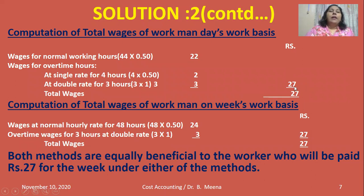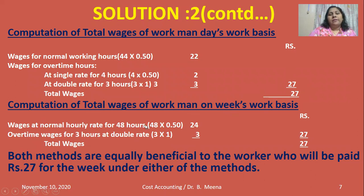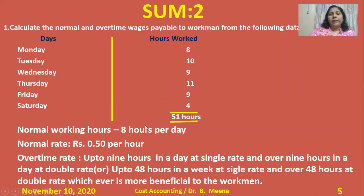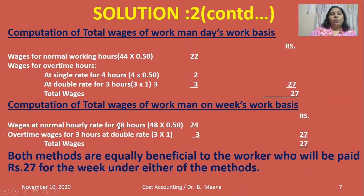Now checking Scheme 2 (week-work basis): wages at normal hourly rate for 48 hours = 48 × 50 paise = 24 rupees. Over 48 hours: 51 − 48 = 3 hours at double the rate = 3 × 1 rupee = 3 rupees. Total earnings under Scheme 2 = 24 + 3 = 27 rupees. The same earnings of 27 rupees are obtained under both schemes.